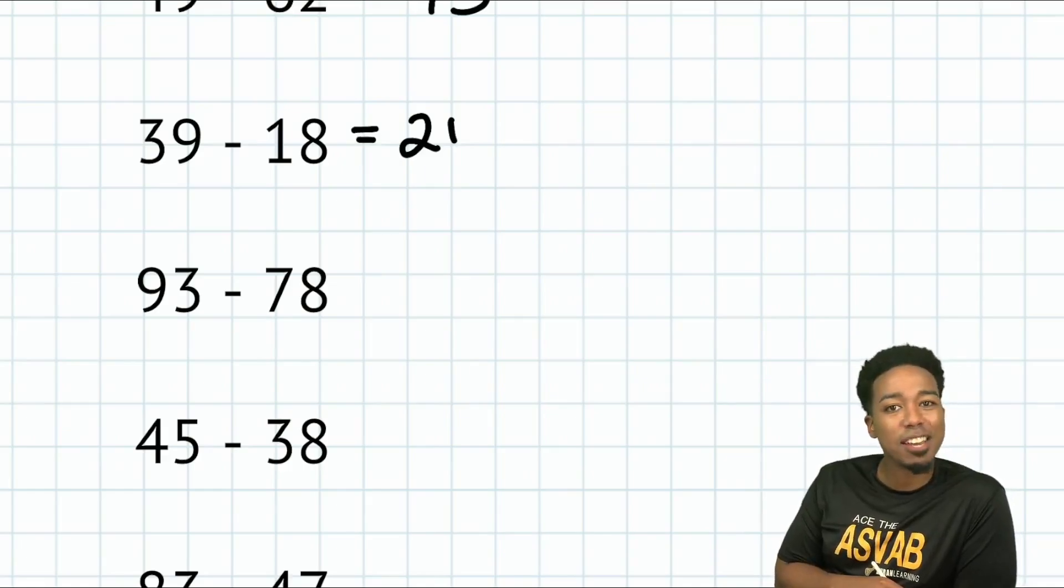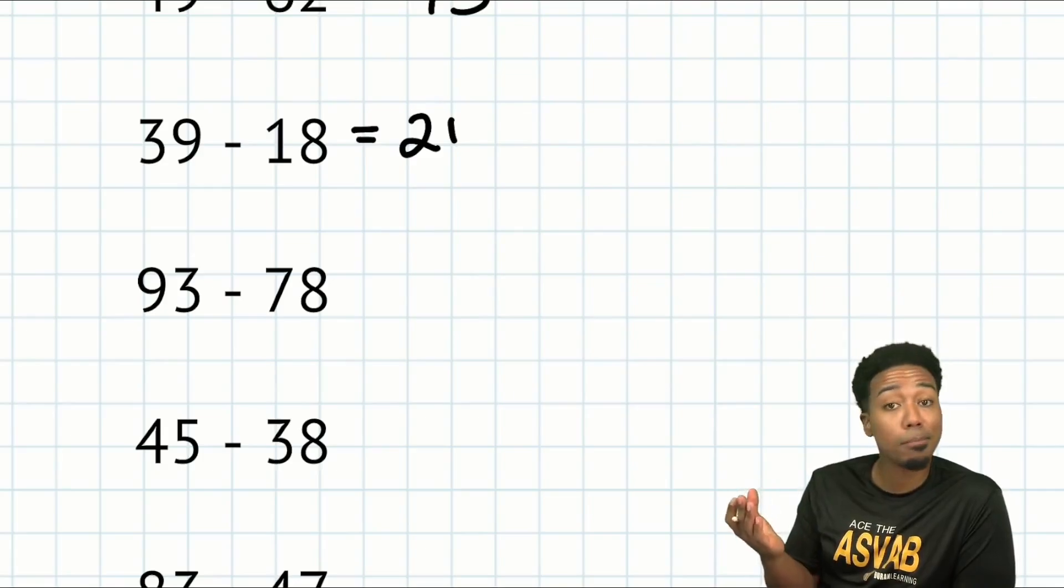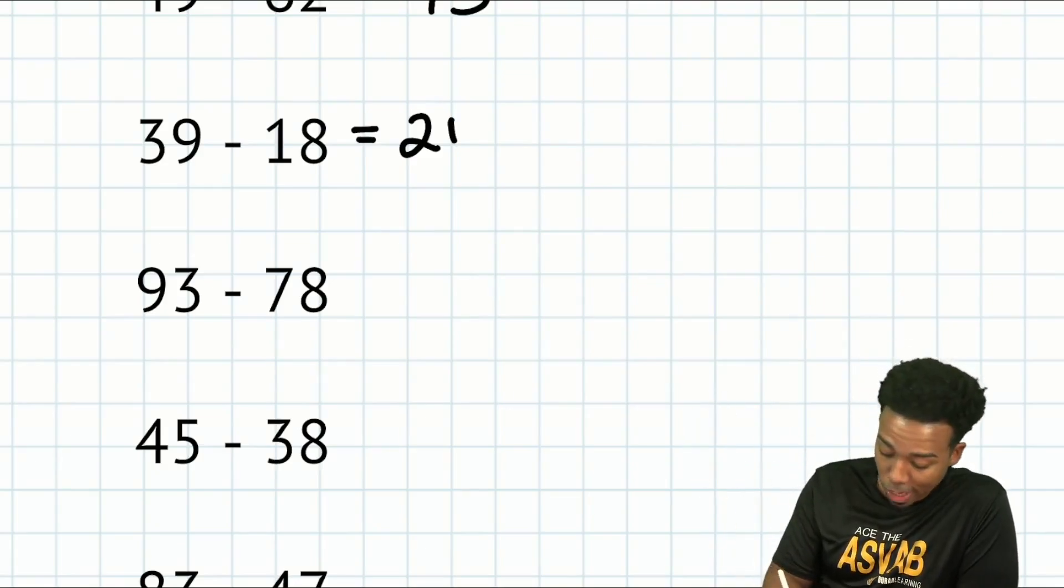So mental math is just as much about knowing when to use mental math to save time. Next up, 93 minus 78. Just take away the 80, add two back. So that's going to end up being 13 plus two, 15, and we're good.